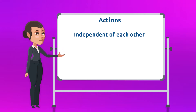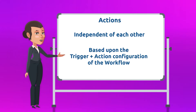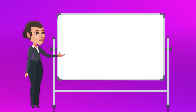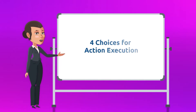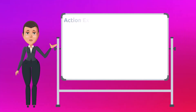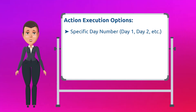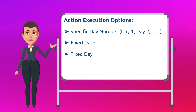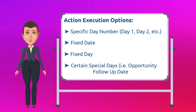Actions are independent of each other and will also occur based on the trigger and action configuration of the workflow. As of this release there are four choices for when your actions occur: on a specific day number such as day one, day two, etc., on a fixed date, on a fixed day, or on certain special days such as the follow-up date for an opportunity.